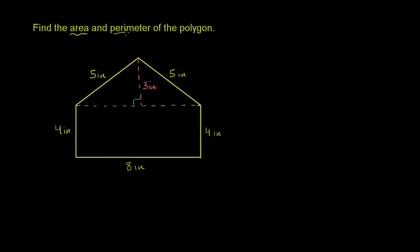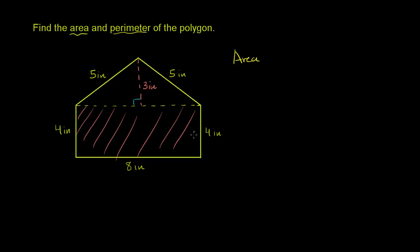Find the area and perimeter of the polygon. Let's start with the area first. The area of this polygon has two parts. You have this rectangular part right over here, and that area is pretty straightforward — it's just going to be base times height. So the area is going to be 8 times 4 for the rectangular part.